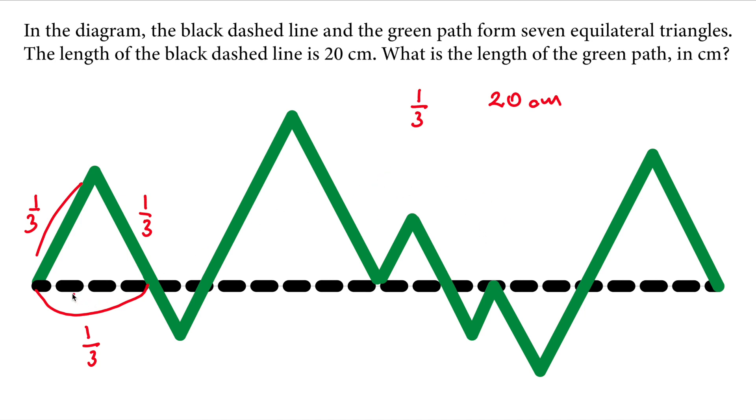So therefore, two thirds of the perimeter would be 40 centimeters. That will give us the total length of the green lines. So this is our answer to this question. I hope you liked this question and enjoyed the solution.